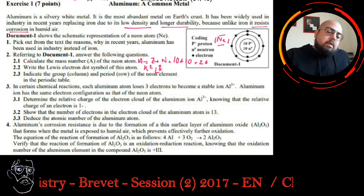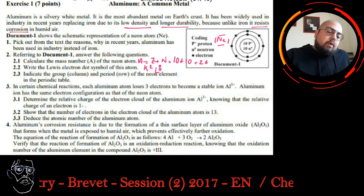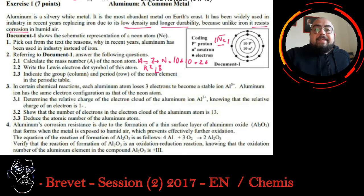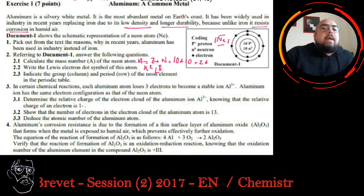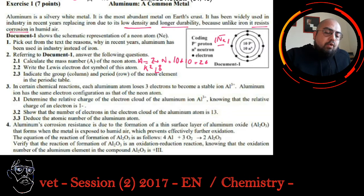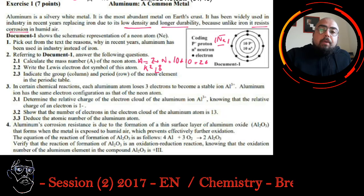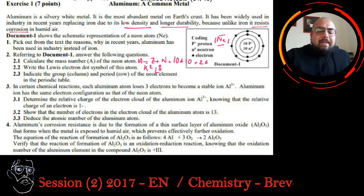Indicate the group or column and period or row of the neon electron in the periodic table. We have K2L8. L8 means that it's group 8 or column 18. As for row, it will be the second row because I'm using a couple of energy levels, K and L.